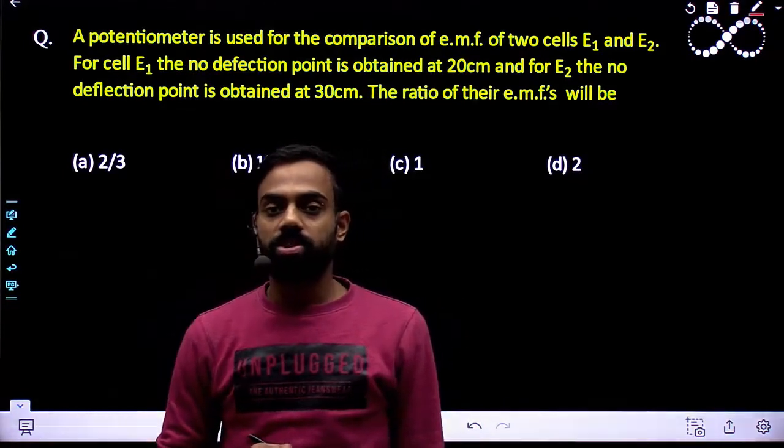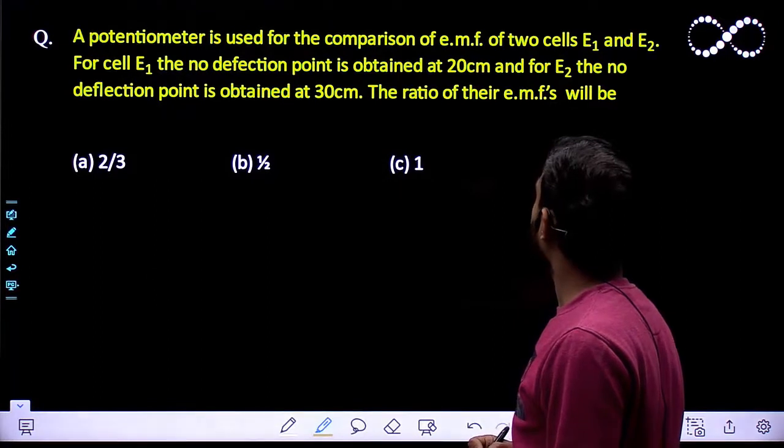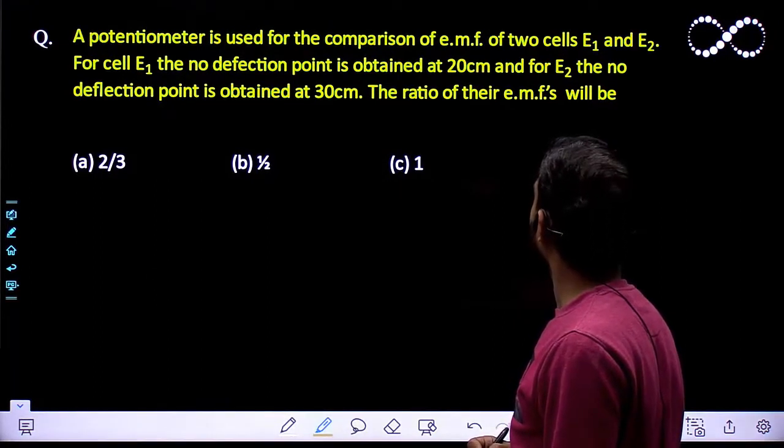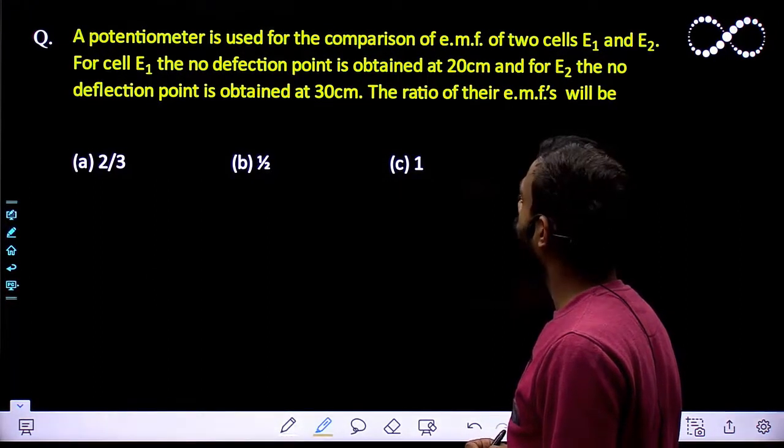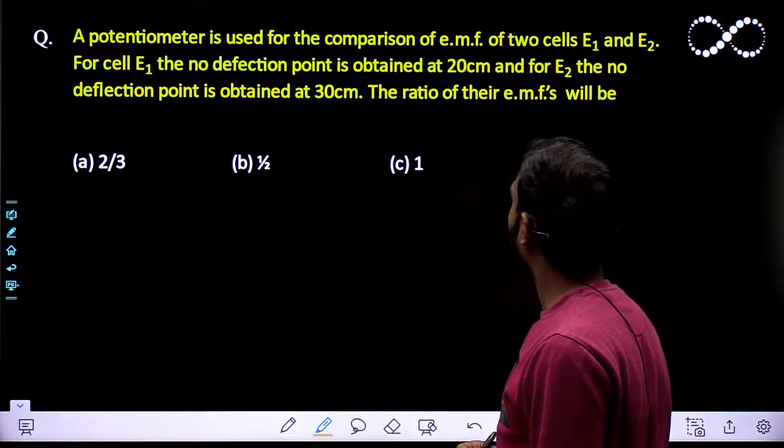Hello students, let us see this question here. A potentiometer wire is used for the comparison of EMF of two cells E1 and E2. For E1, the no deflection point is obtained at 20 centimeters.